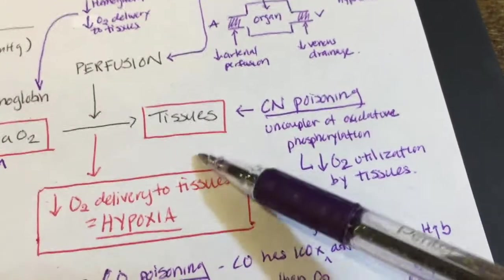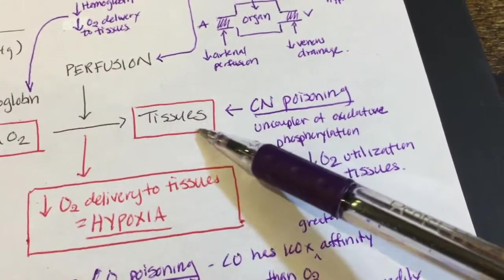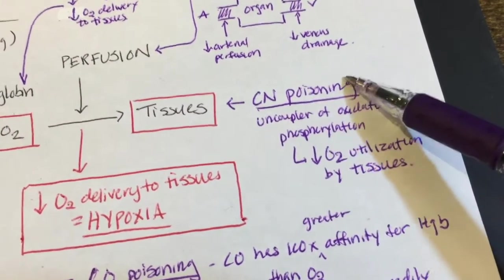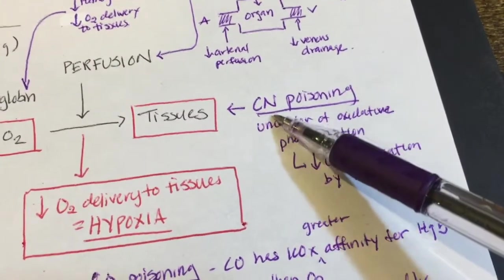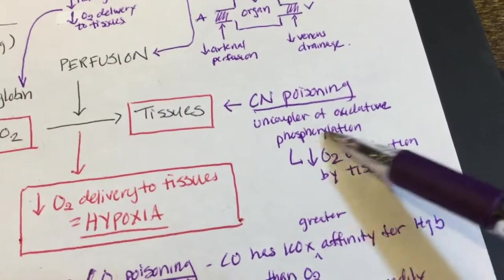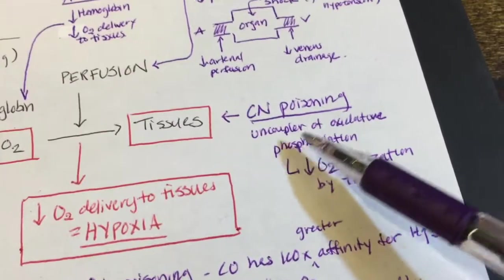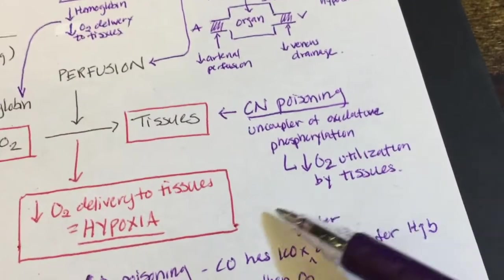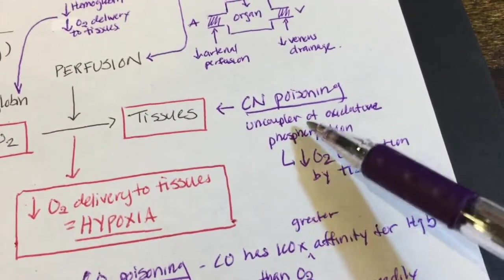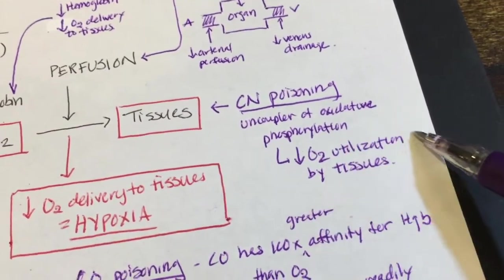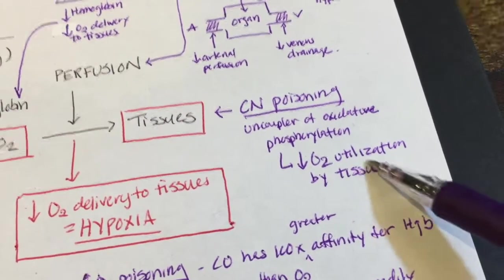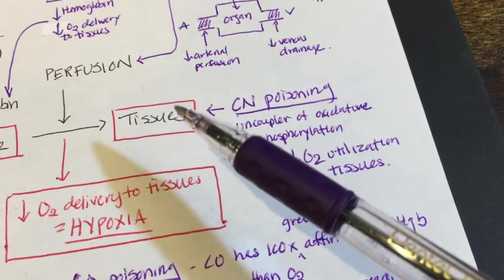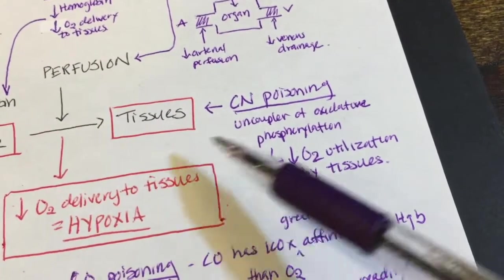The final cause is a problem at the tissue level itself. The key example is cyanide poisoning, which is an uncoupler of oxidative phosphorylation. This results in decreased oxygen utilization by the tissues — the tissues can't use oxygen effectively — leading to decreased effective oxygen delivery and causing hypoxia.